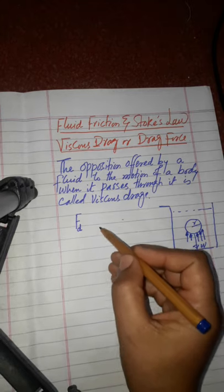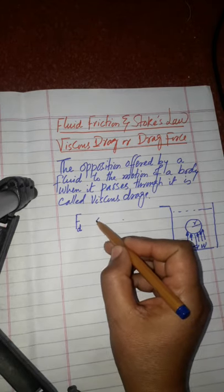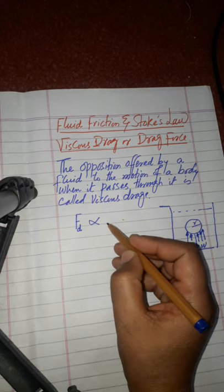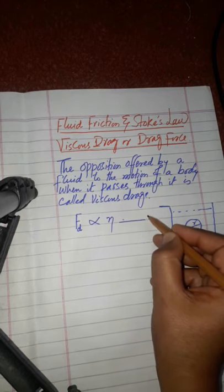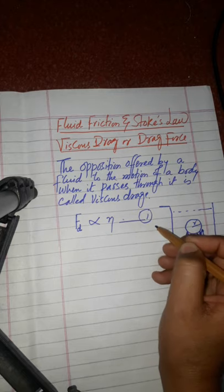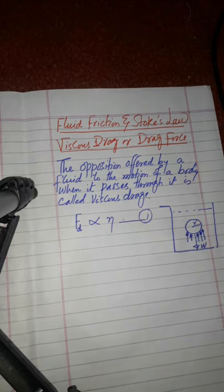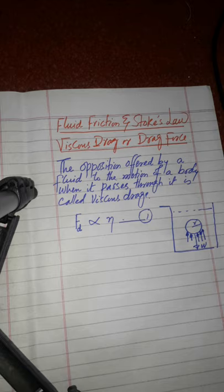Drag force is, number one, directly proportional to the viscosity of the fluid. If the fluid is more viscous, the viscous drag or drag force on the body will be more. For example, if you drop a body in honey or in water, the drag force in honey will be more — the opposing force will be greater than in water.